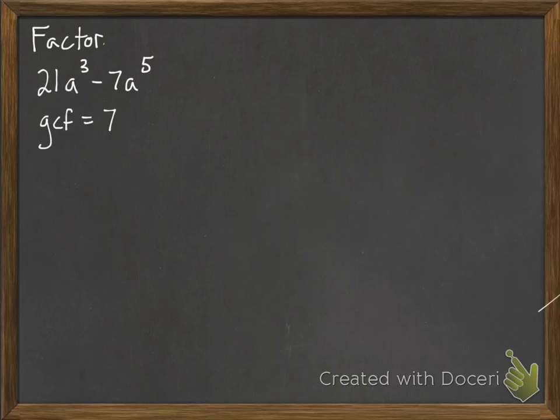And then we look at the a³ and the a⁵. Okay, the a shows up in both. The smallest power is a to the third. So that's the first step. We found our GCF.